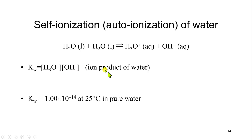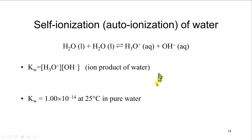This is also known as the ion product for water — it's an old-fashioned term where you have these two ions multiplied together. This turns out at room temperature to have a value of about 1 times 10 to the minus 14.